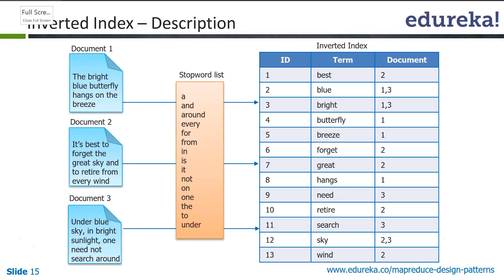This slide is a schematic representation of the inverted index. You have document one, document two, document three. We remove the stop word list, and then on the right-hand side you can see the data structure that is built. For example, 'best' is present in the second document, and 'blue' in the first and third document, and so on.